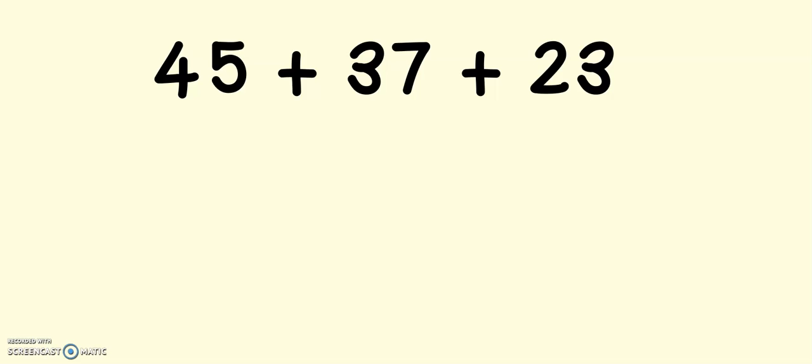Here is our first example problem together. We have 45 plus 37 plus 23. So as you can see, we have 3 addends to put together. Now right now, my problem is written horizontally.